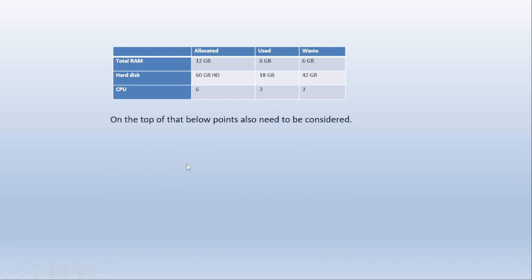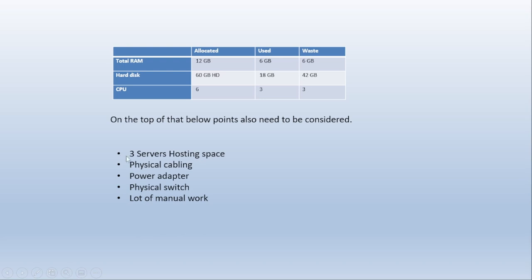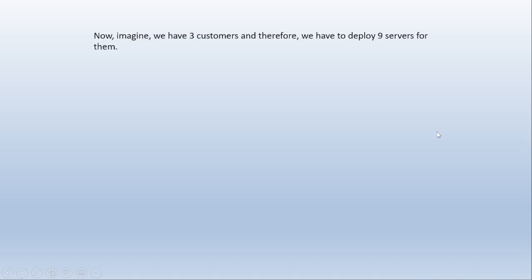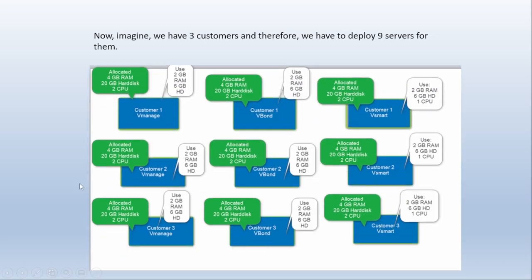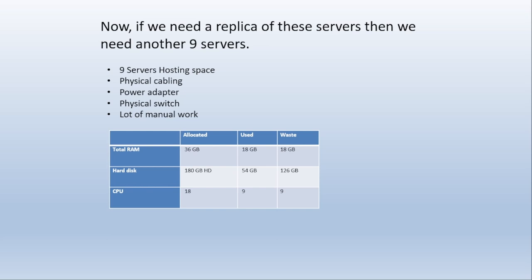On top of that, the following points also need to be considered: three server hosting spaces, physical cabling, power adapters, physical switches, and a lot of manual work — every time we need to send a field engineer to the data center to do all these jobs. Now imagine we have three customers, and therefore we have to deploy nine servers for them. There will be a lot of resource wastage. To optimize resource utilization, virtualization came into the market.